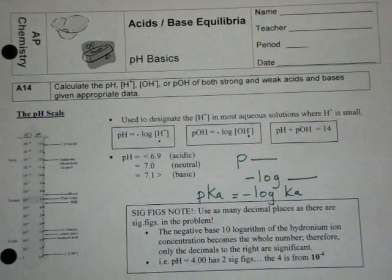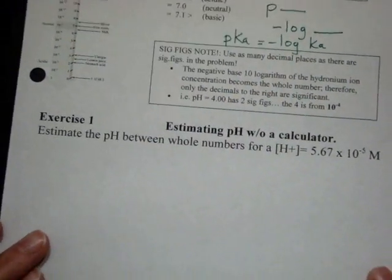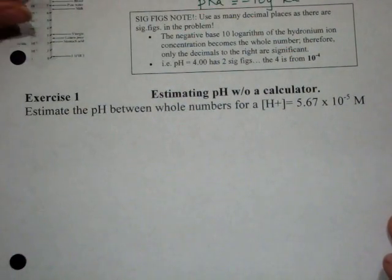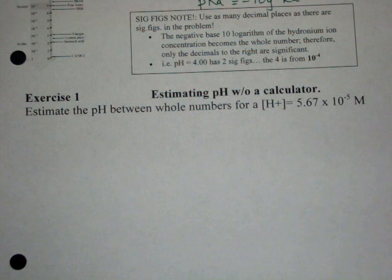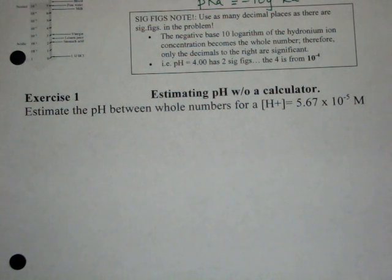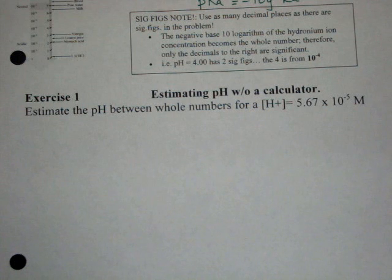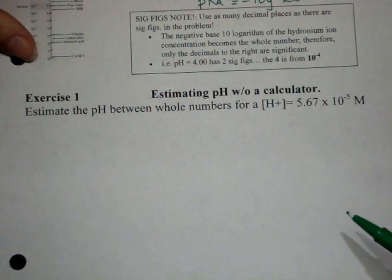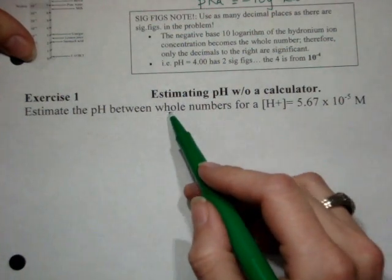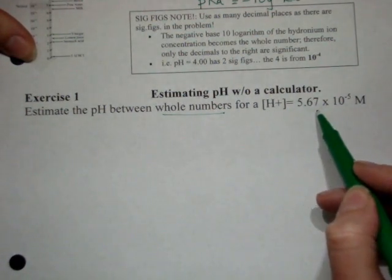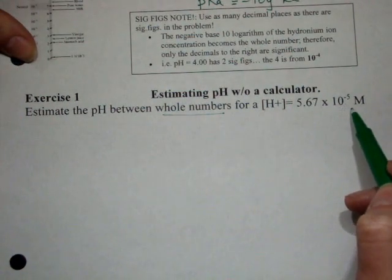I'm going to come back to the sig figs note here in just a minute. As we all know, there are no calculators allowed on the multiple choice version of the AP test. So in most of those cases, if you have a situation where you have to estimate the pH of something, if you can get it down to between two whole numbers, then you'll usually be okay. So for this first exercise, let's estimate the pH between whole numbers for 5.67 times 10 to the negative fifth molar.